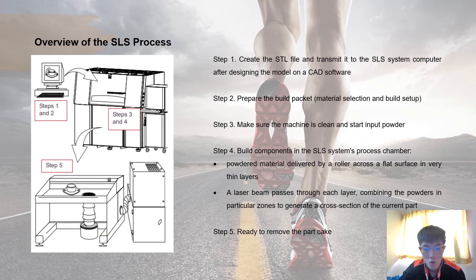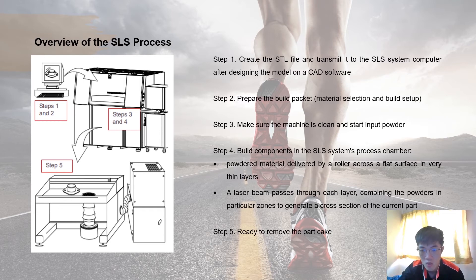Next is an overview of the SLS process. The first step is to create an STL file and transmit it to the SLS system computer after designing the model in CAD software. Next, prepare the build chamber. After that, make sure the machine is clean and input the powder. Step 4 is to build components in the SLS system process chamber. The last step is to remove the part cake.